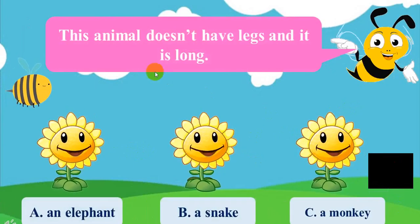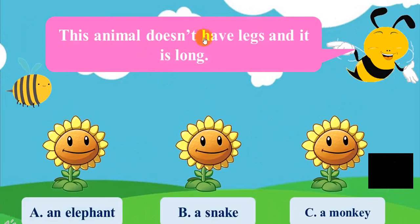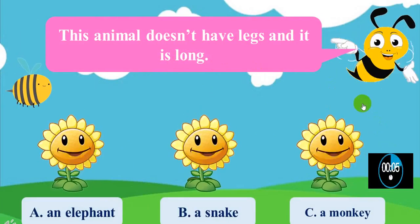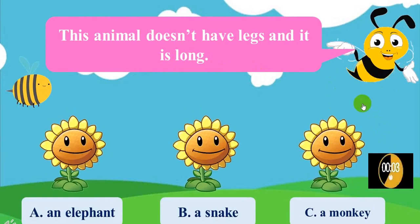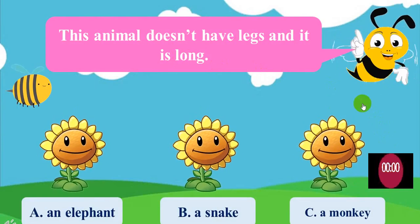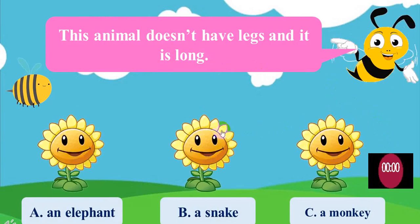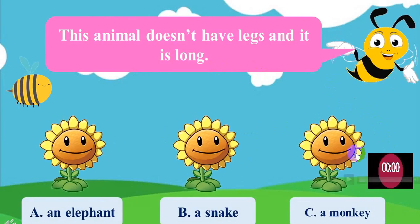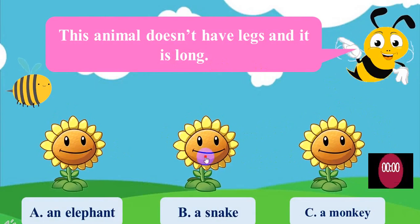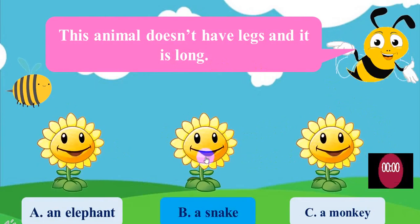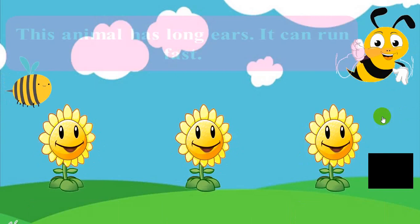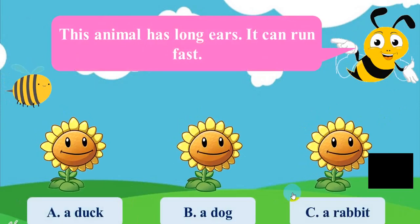Listen. This animal doesn't have legs and it is long. A, B, C. The answer is B, a snake.